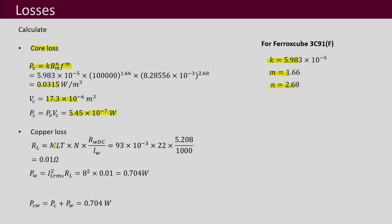We then calculate copper loss using the mean length per turn, number of turns, and resistance per unit length for the chosen copper wire to obtain the total resistance. Multiplying by the square of the current, we get 0.704 watts. Since copper loss is very small compared to core loss, the total loss is almost equal to the copper loss — this is the loss occurring in the designed inductor.